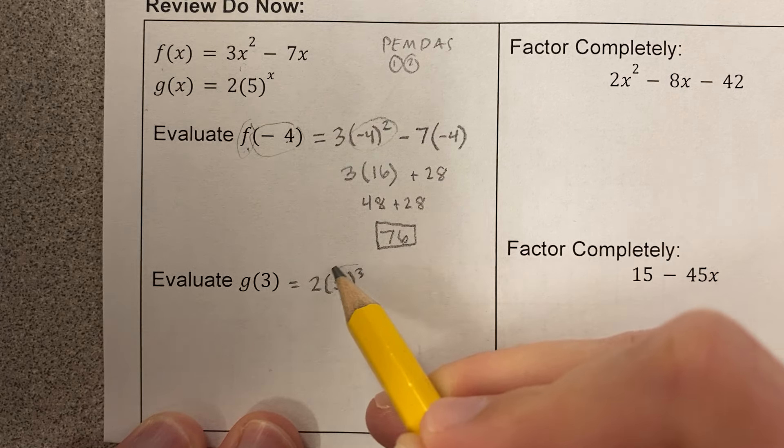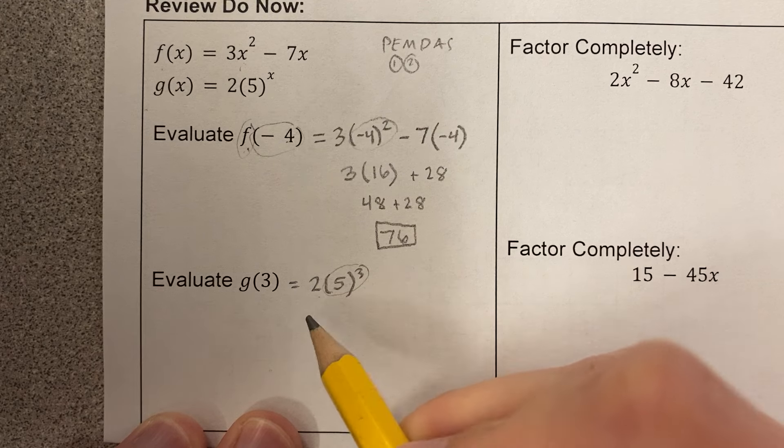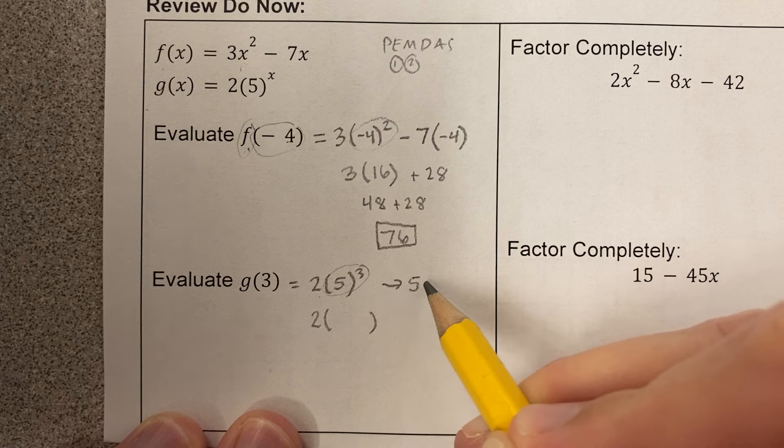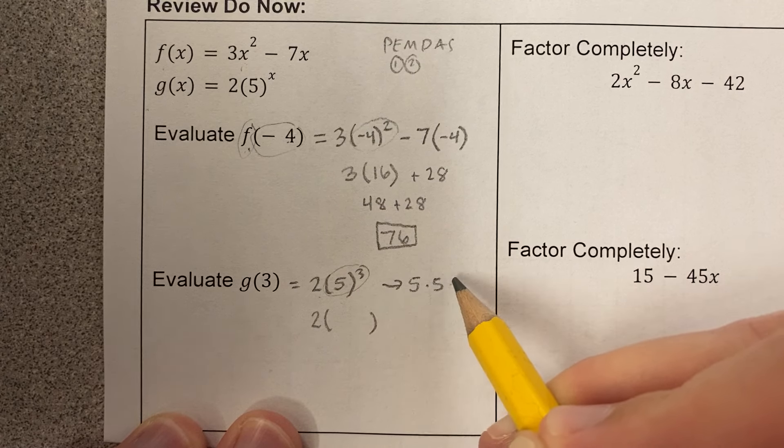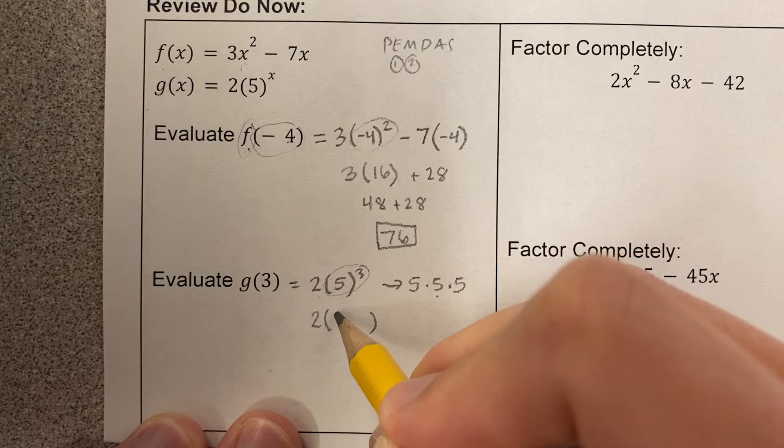Once again, exponents first before multiplication. So this is 5 to the power of 3. That's 5 times 5 times 5. You can use the calculator. You can do whatever you need to, but 5 times 5 is 25. Times 5 is 125.